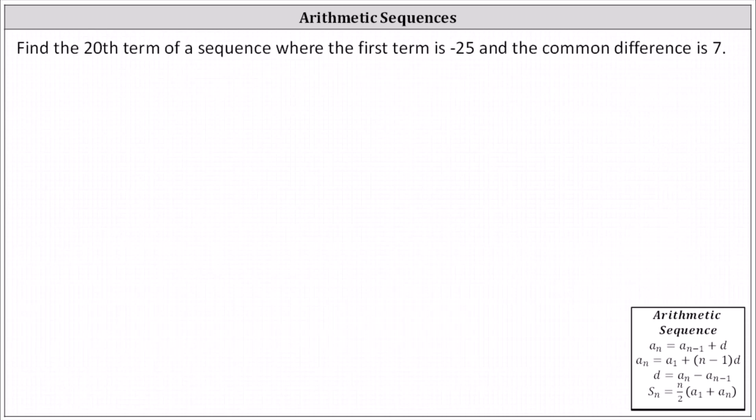In order to determine the 20th term, we'll find the formula for a sub n, where a sub n equals a sub 1 plus the quantity n minus 1 times d.